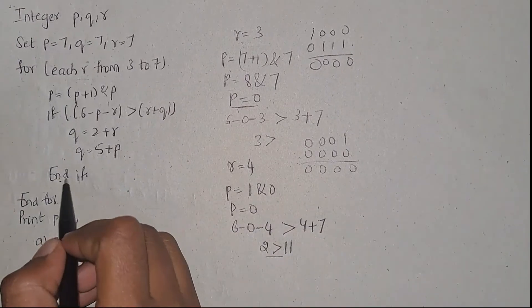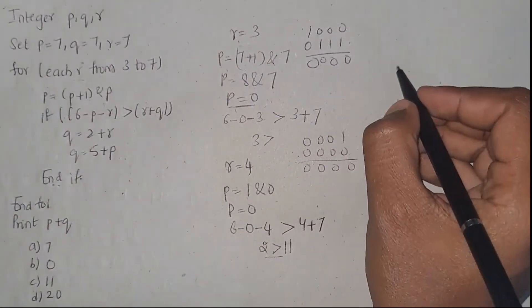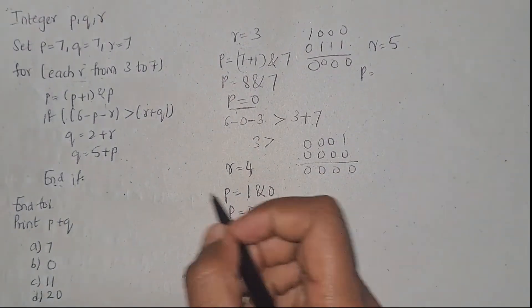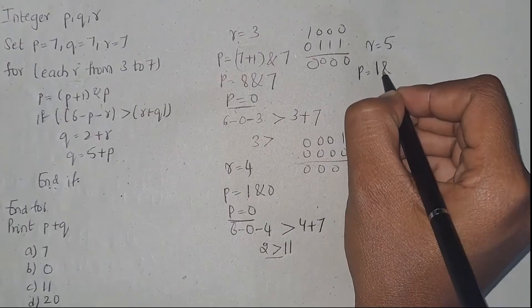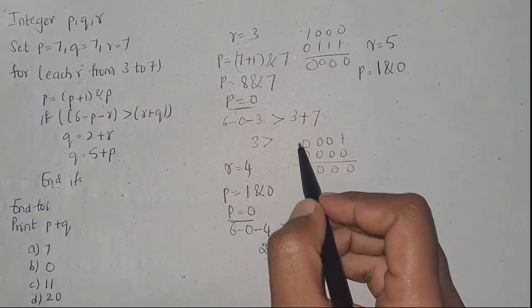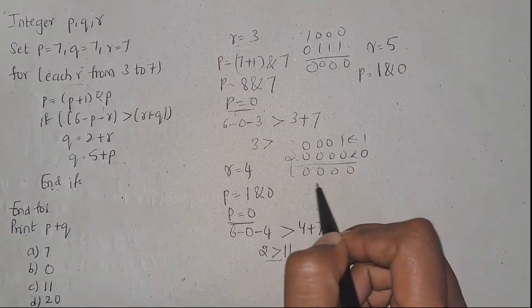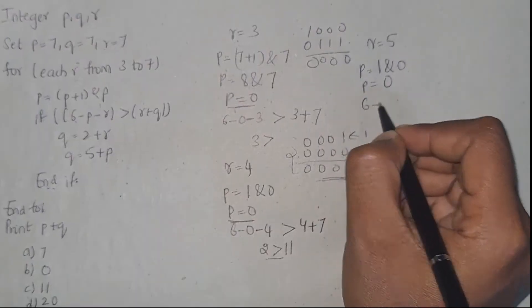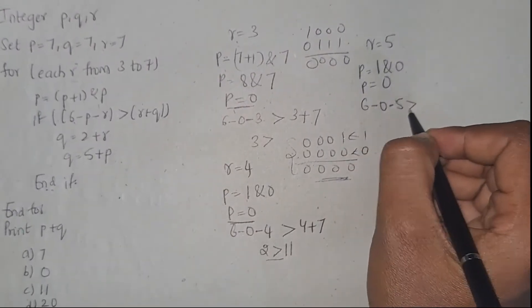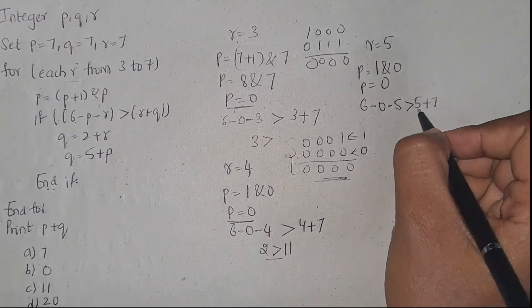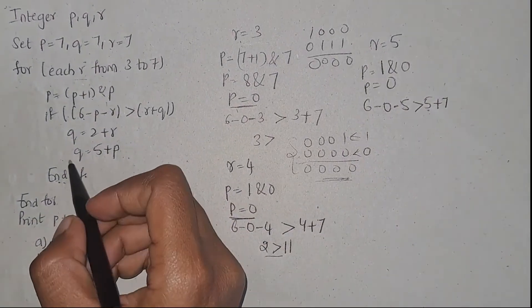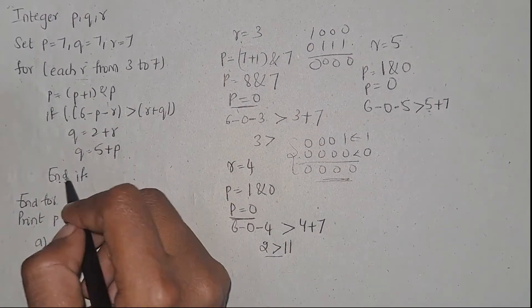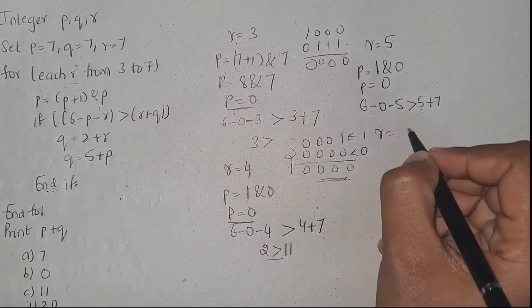Next iteration r equals 5. p is 0, so 0 plus 1 is 1. 1 bitwise AND 0 gives 0. Check condition: 6 minus 0 minus 5, is greater than 5 plus 7? This is false, so we will not go into the if condition statements. End if, and next iteration r equals 6.